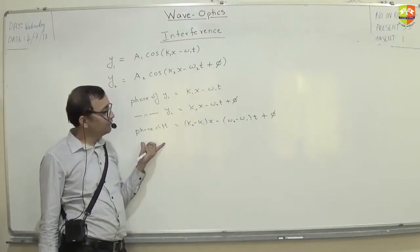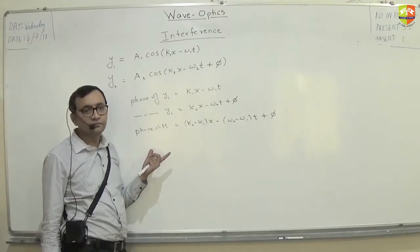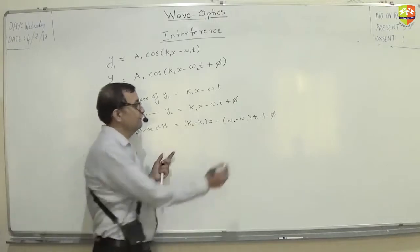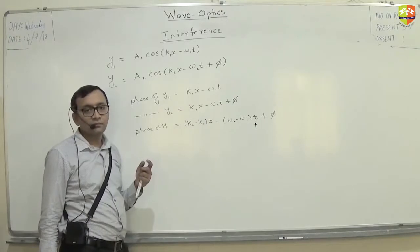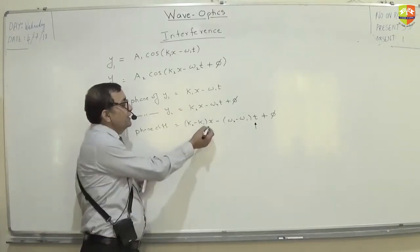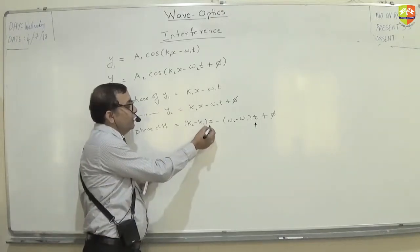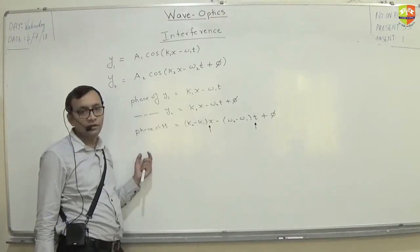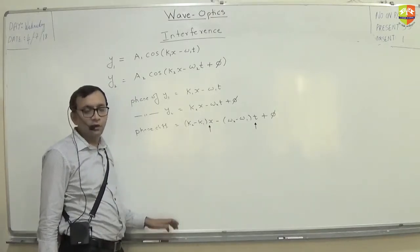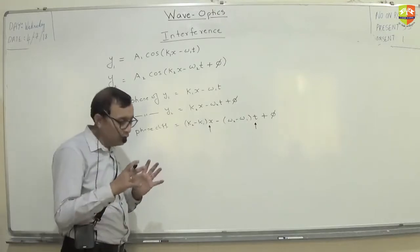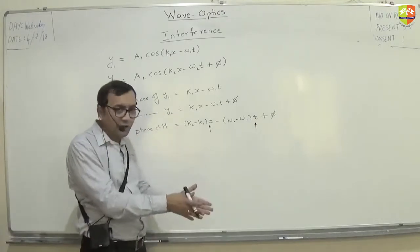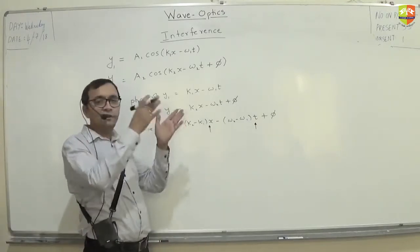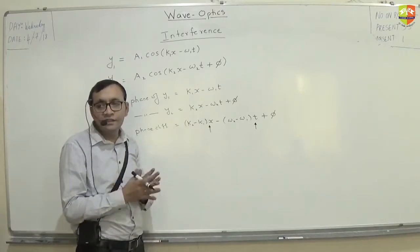Now, what happens to this phase difference? Does it remain constant with time? This phase difference changes with time — it is a function of time. And this phase difference also depends on location — where you are located. You can fix the location, say I will only observe at x equal to 2 cm, but even if you fix the location, with time the phase changes.